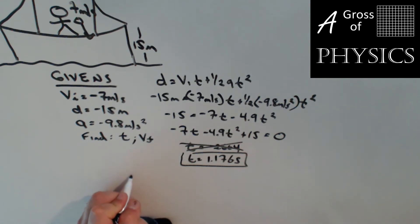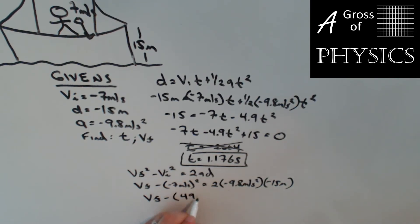Now to find vf, I would use equation 5. Vf squared minus vi squared equals 2ad. Vf is what I'm looking for minus negative 7 meters per second squared equals 2 times negative 9.8 meters per second squared times negative 15 meters. A lot of negatives in this problem. So vf, the minus is outside the parentheses, but when I square the 7, I'll get 49. 2 times 9.8 times 15, I'm going to get 294. And since the two negatives are involved, that'll become a positive.